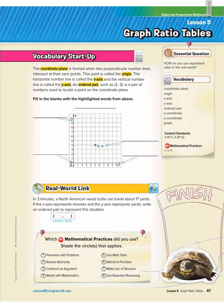So we're on workbook page 47. Today we're going to learn about graphing ratio tables, which we did ratio tables yesterday. So first we're going to do some definitions. First we're going to talk about a coordinate plane.